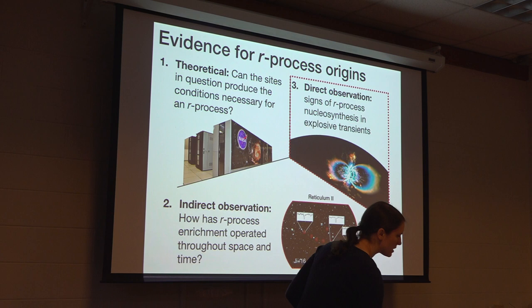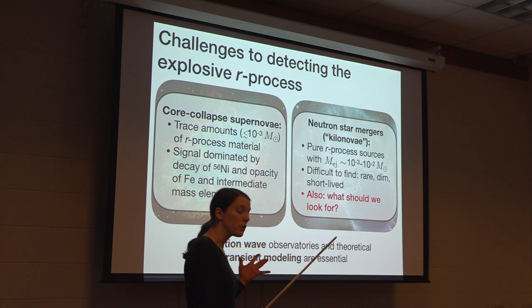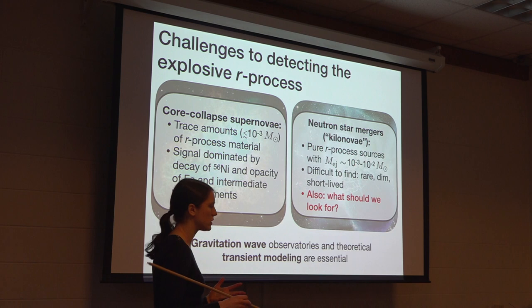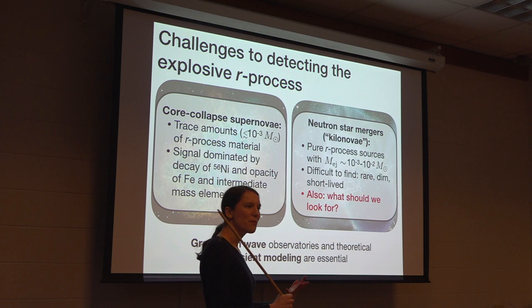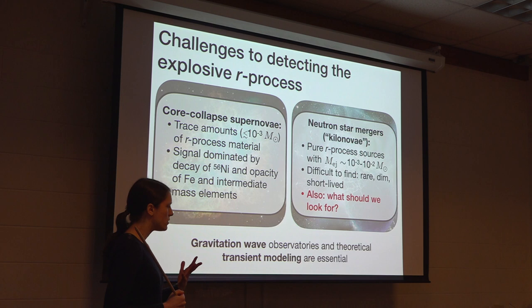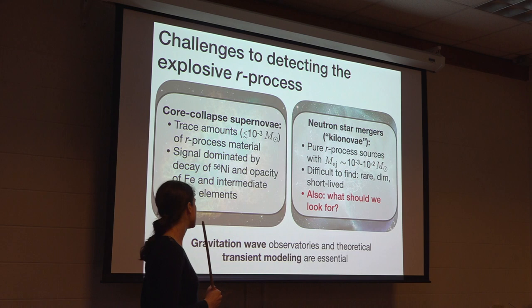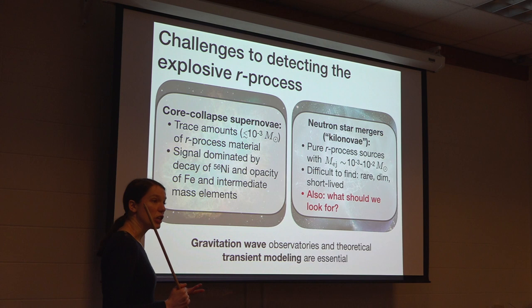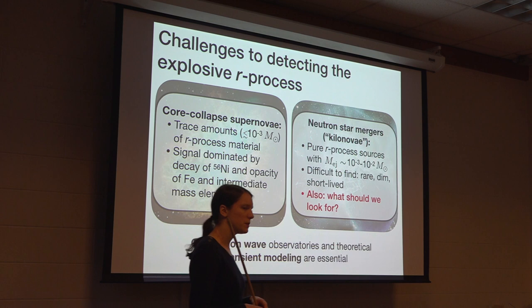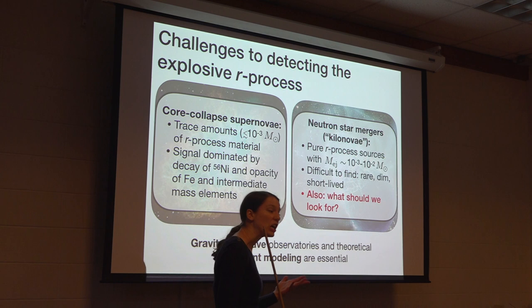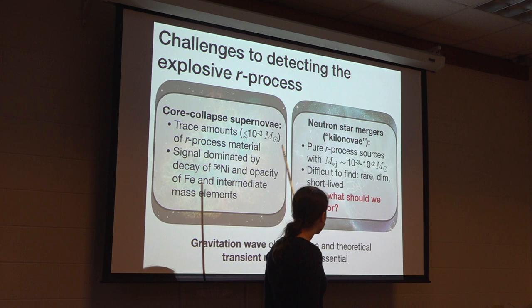A useful third possibility we're now starting to have access to is direct observation of an R-process nucleosynthesis explosive event. Historically this has been a challenge regardless of the scenario you favor. In the case of core collapse supernovae, the issue is the very small amounts of R-process material produced. Adding R-process material into a core collapse supernova that's fairly well described by the nucleosynthesis of nickel-56, its decay, and the opacity of iron and intermediate mass elements doesn't really change the expected signal.